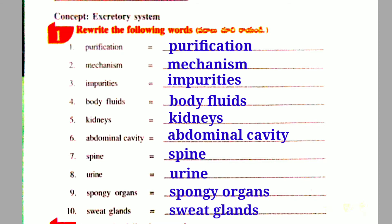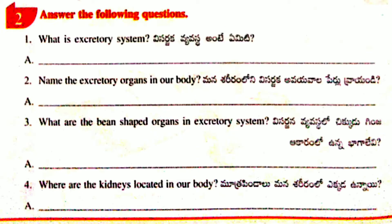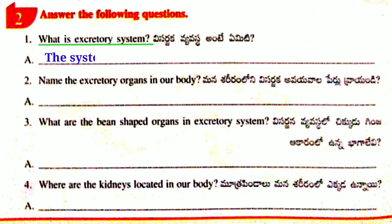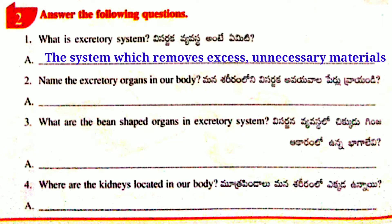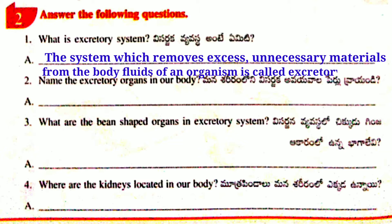Sweat Glands. Second Activity: Answer the following questions. First Question: What is the excretory system? Answer: The system which removes excess unnecessary materials from the body fluids of an organism is